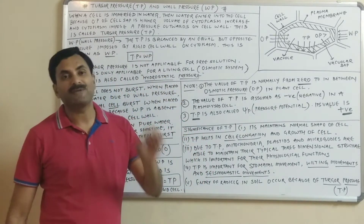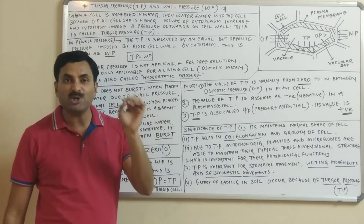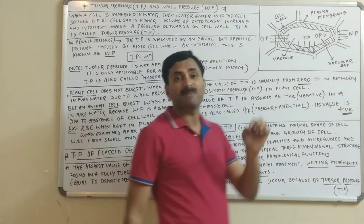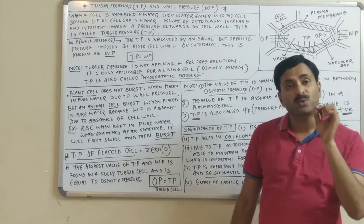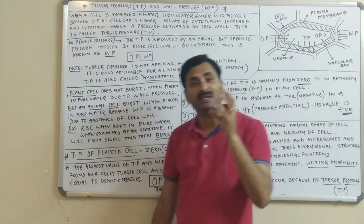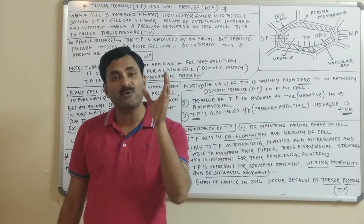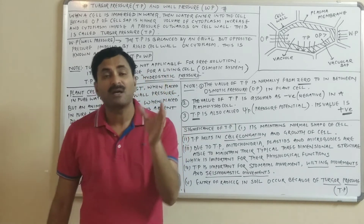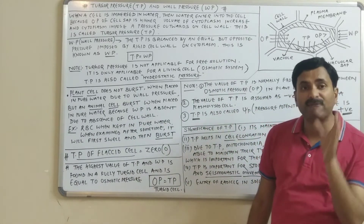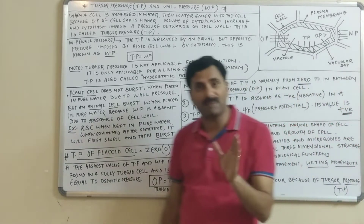Hello everyone. Today we are going to study about the turgor pressure and the wall pressure, which are also called TP and WP in short. These two concepts are very important to study other physiological concepts such as DPD and water potential. When we study the diffusion pressure deficit (DPD) and water potential, we have to use the TP, WP, and OP concepts.